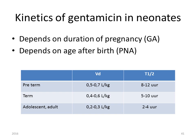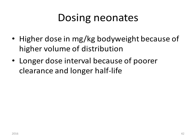There is also a change in half-life: while adults and adolescents have a half-life of 2 to 4 hours, preterm neonates have a half-life of 8 to 12 hours. When dosing drugs to neonates, you must on the one hand give a higher dose per kilogram body weight because of the higher volume of distribution, and on the other hand take a longer dosing interval because of their poorer clearance and longer half-life.